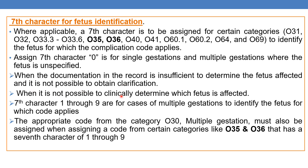Seventh character 0 is also used when it is not possible to clinically determine which fetus is affected. In summary, seventh character 0 applies for single gestations, for an unspecified fetus in multiple gestations, when documentation is insufficient, and when it is clinically not possible to determine which fetus is affected. Seventh characters 1 through 9 identify individual fetuses in multiple gestation cases.